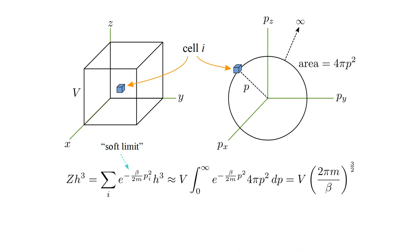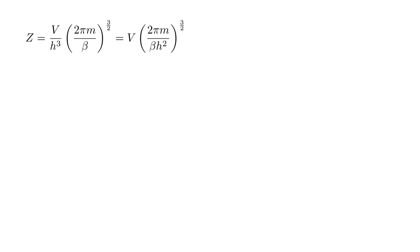For x-y-z coordinate space, this simply gives us a factor of V. For momentum space, we consider a sphere of radius p. This has area four pi p squared. If p increases by dp, this creates a shell of volume four pi p squared dp. So, Z h cubed equals V times the integral from zero to infinity of e to the minus beta over 2m p squared, four pi p squared dp. This equals V times the three-halves power of two pi m over beta. Dividing by h cubed, we have Z equals V over h cubed times the three-halves power of two pi m over beta.